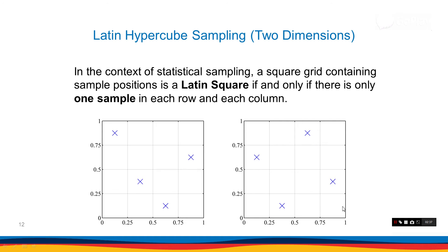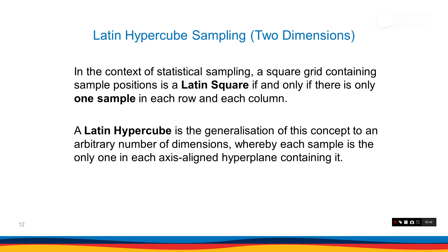That's for two dimensions, but you can generalize this concept to any number of dimensions. For example, in three dimensions, we have a cube and there is one sample per row, column, and depth. So that's where the term Latin hypercube comes from.